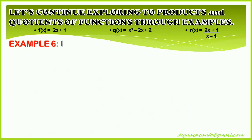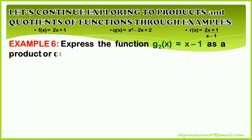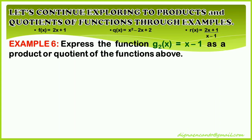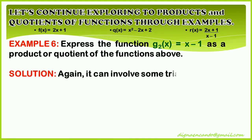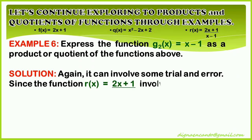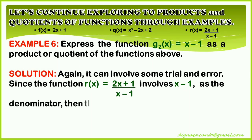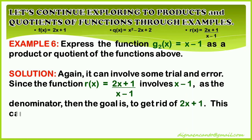Example 6: express the function g sub 2 of x equals x minus 1 as a product or quotient of the functions above. For the solution, again it can involve some trial and error. Since the function r of x equals 2x plus 1 over x minus 1 involves x minus 1 as the denominator, then the goal is to get rid of 2x plus 1. This can be done by dividing f of x by r of x.